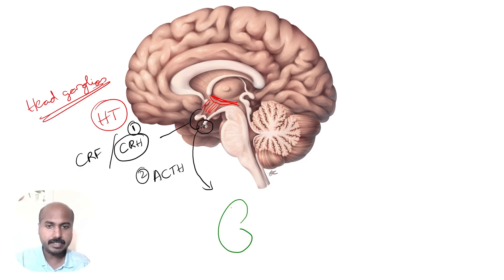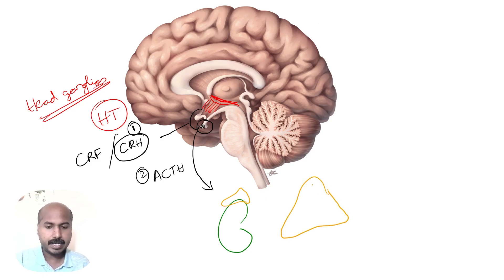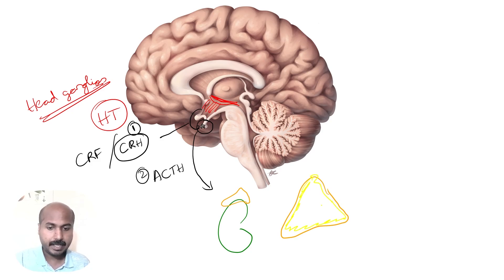The adrenal gland is located just above the kidney. It is roughly a triangular-shaped gland that contains an outer yellowish cortex and an inner medulla.